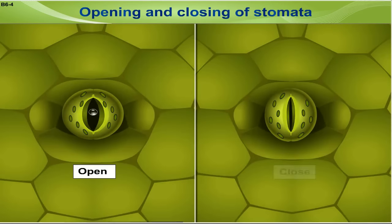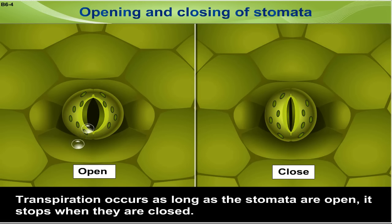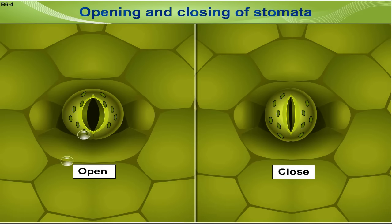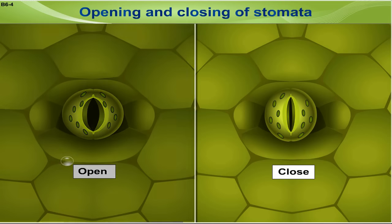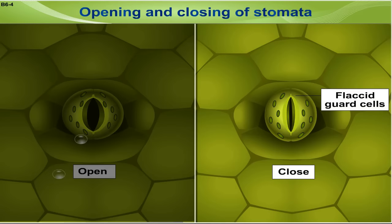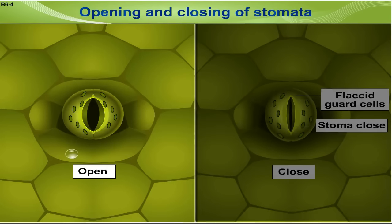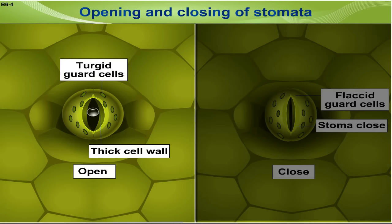Mechanism of opening and closing of stomata: transpiration occurs as long as the stomata are open; it stops when they are closed. When closed, the stomata show flaccid guard cells and the stoma is shut. When open, the guard cells are turgid, with a thick inner cell wall and a thin outer cell wall.